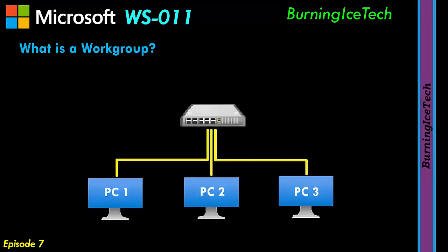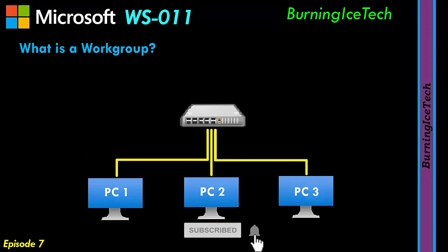So let's start with workgroups. What is a workgroup? A workgroup is a type of network that you'll typically find in an environment that's got very few users — normally not more than 10 or 20 users. So this is most likely going to be the type of network you'll find in a home environment. These three PCs that we see here at the bottom — imagine that these three PCs are in someone's home. That's basically where you're probably going to see a workgroup situation: a home network.